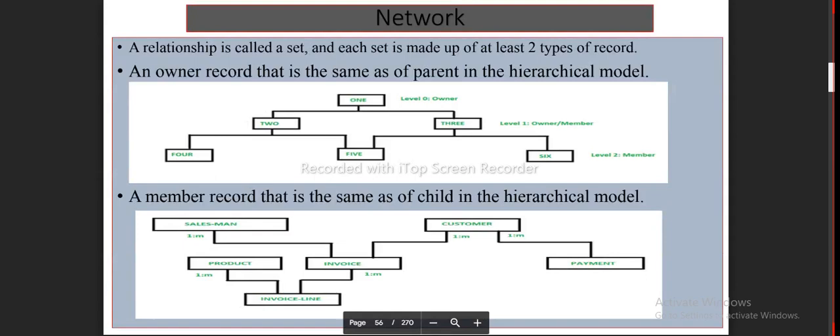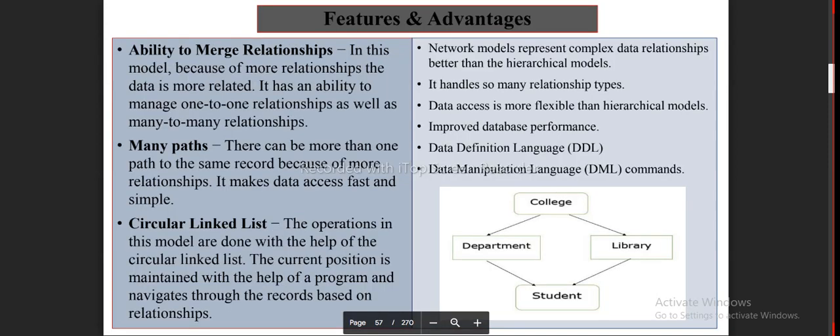Network: A Relationship is called a Set And each Set is made up of at least 2 types of Record: an Owner Record that is the same as of Parent in the Hierarchical Model, a Member Record that is the same as of Child in the Hierarchical Model. Page 57 of 270.